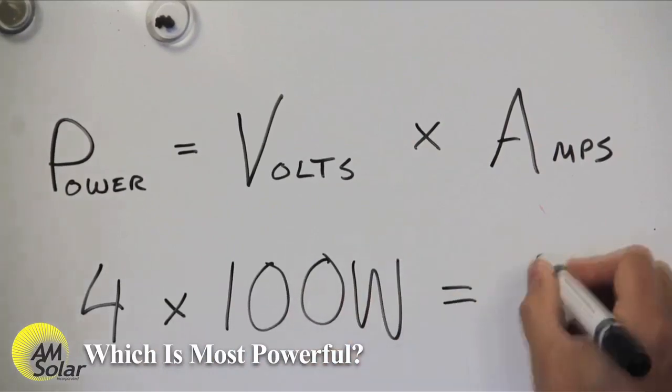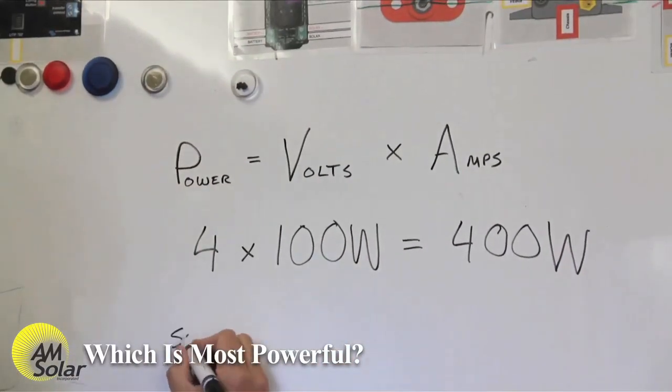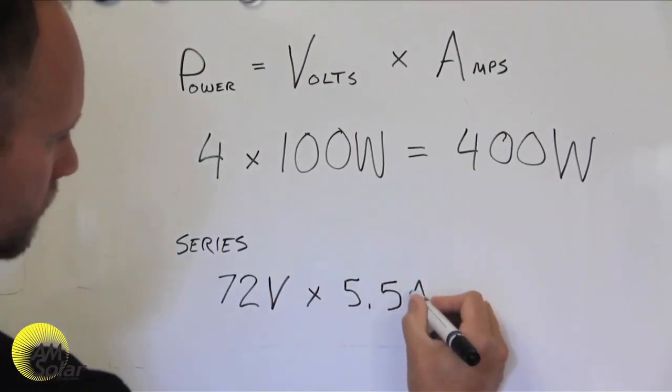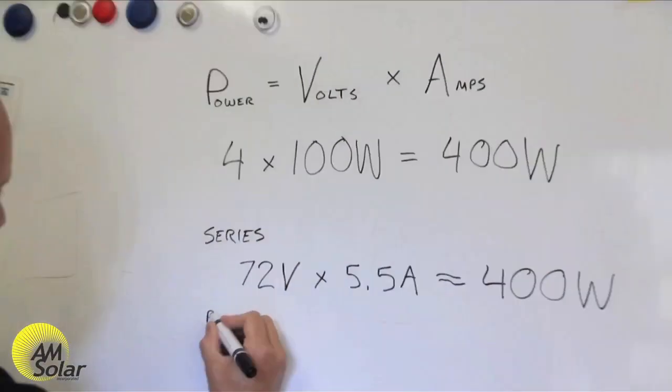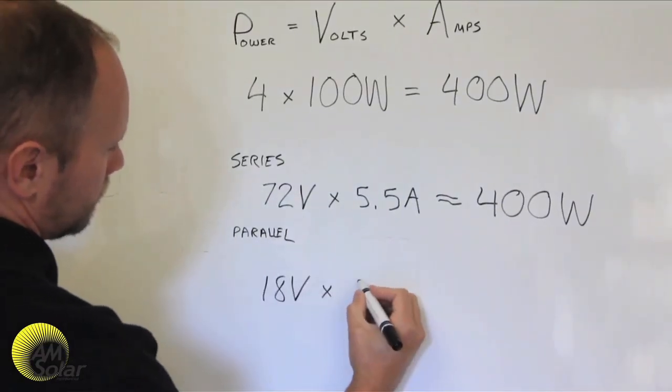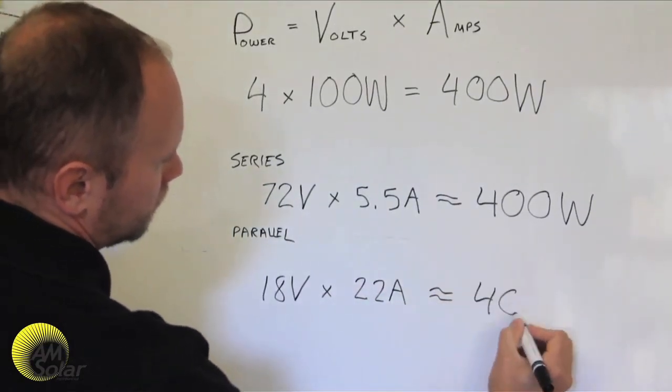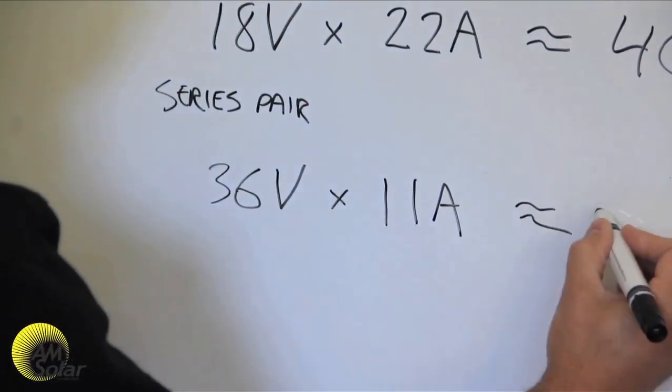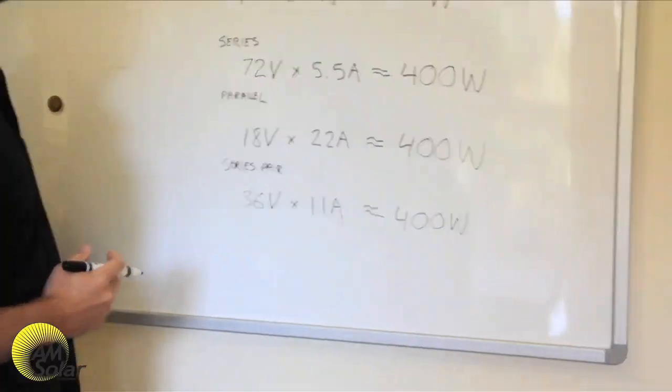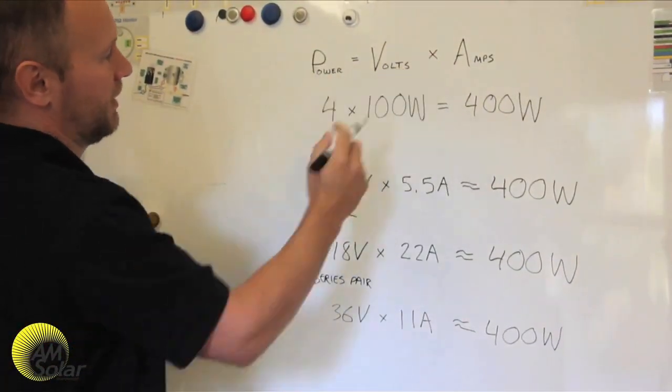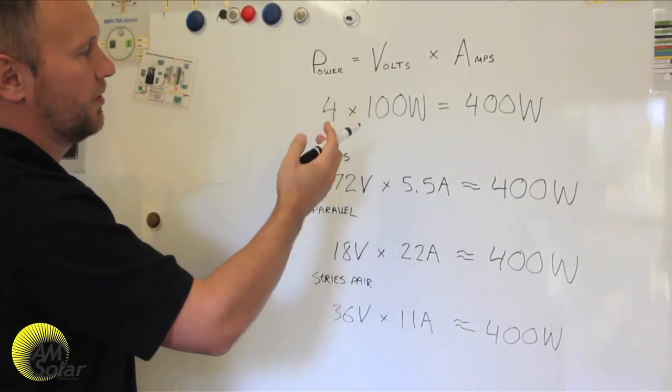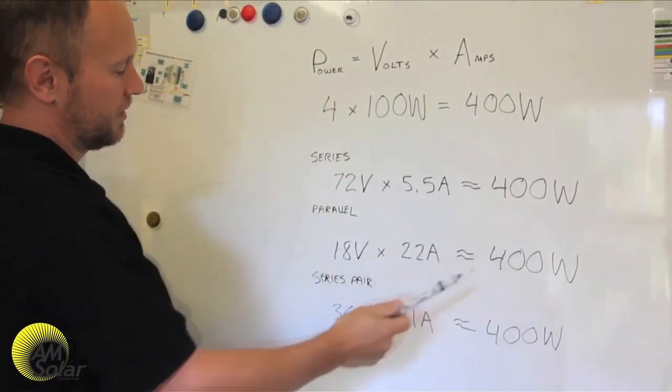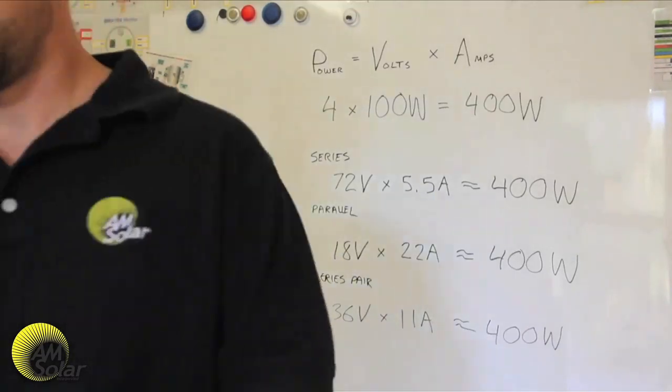Assuming no partial shade and cable thick enough to make line losses negligible, they all produce the same amount of power. Power sums based on the wattage rating of each panel, no matter how they are connected. If you had four 100 watt panels, each with a VMPP of 18 volts and an IMPP of 5.5 amps, you would have 400 watts. Since power equals volts times amps, 72 volts times 5.5 amps equals 400 watts, 18 volts times 22 amps equals 400 watts, and 36 volts times 11 amps also equals 400 watts.